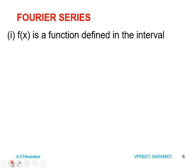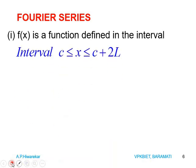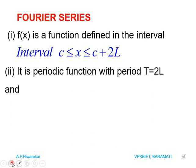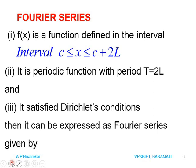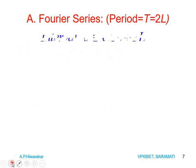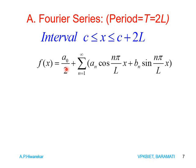Now we will see what Fourier series of a function is and under which condition it exists. If we consider function F(x) defined in the interval C ≤ x ≤ C + 2L, it is a periodic function with period 2L. If it satisfies the Dirichlet conditions, then it can be expressed as a Fourier series. We are talking about Fourier series with period T = 2L and the interval considered as C ≤ x ≤ C + 2L.